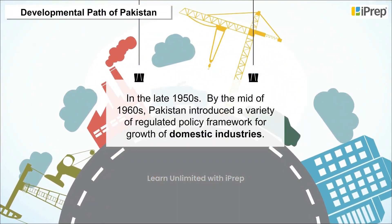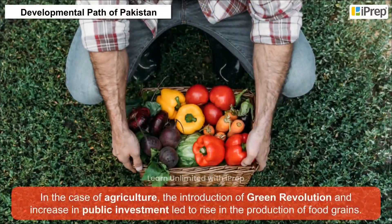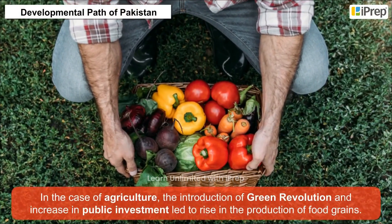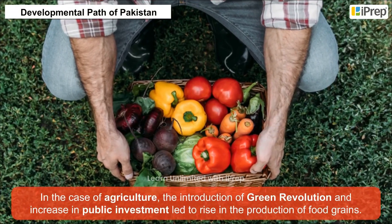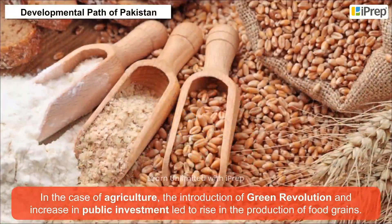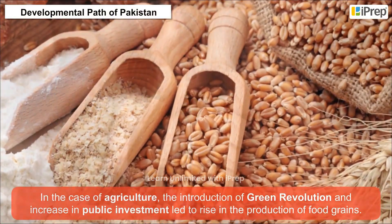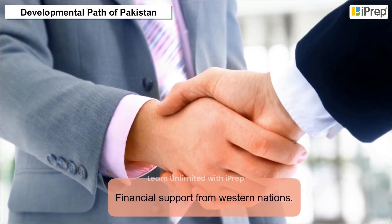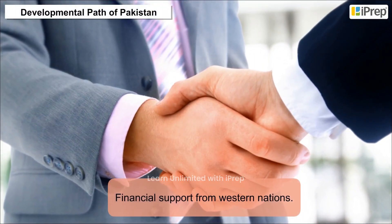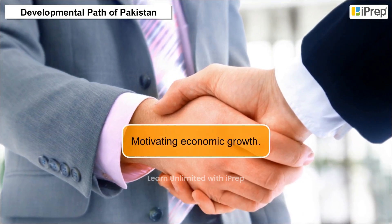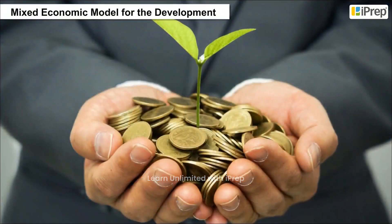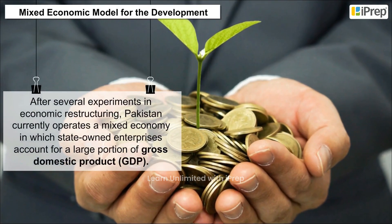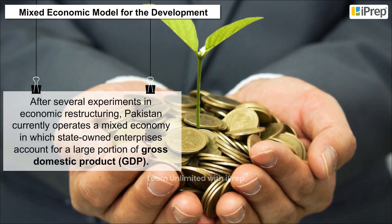For domestic industries, the introduction of the Green Revolution and increased public investment led to a rise in the production of food grains. During this period, Pakistan also received financial support from Western nations, which helped motivate economic growth.